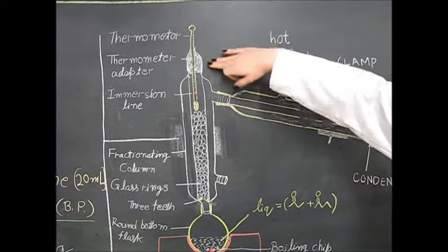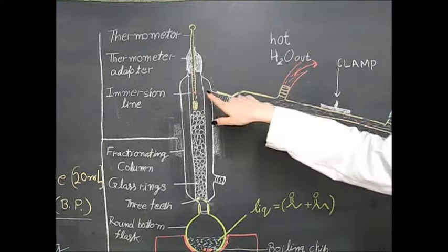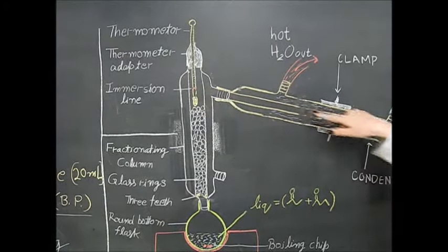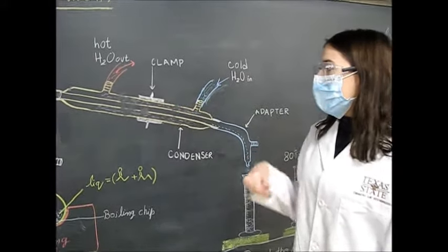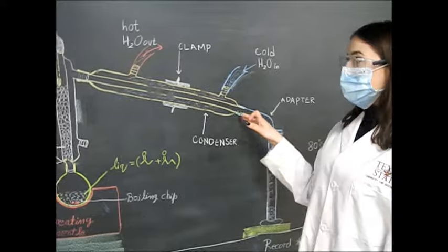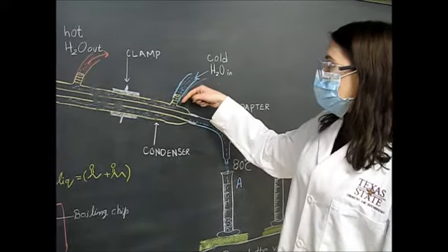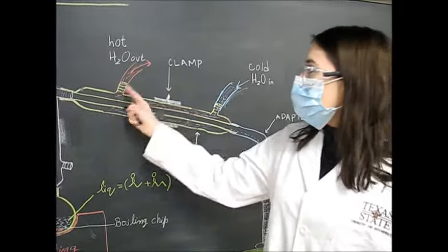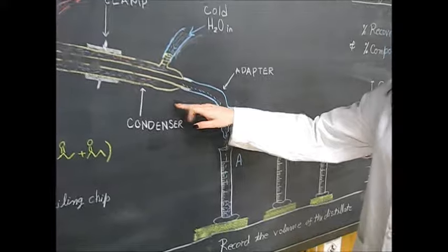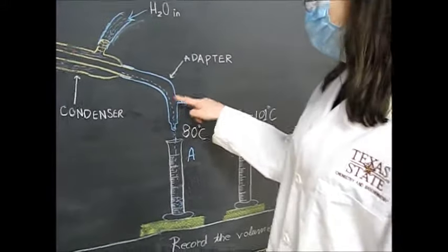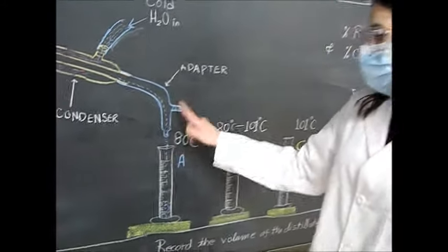Above that, we have the thermometer adapter, which fits into the fractionating column, and the thermometer. It's important that you keep the immersion line aligned with the condenser to get a proper temperature reading. Moving over, we have the condenser, where vapor will condense back into a liquid, held in place with a clamp. Cold water flows in through the bottom side and hot water exits at the top back into the sink. The adapter coming out from the condenser is open, because we never want to create a closed system, and from the adapter the distillate flows into the receiver.